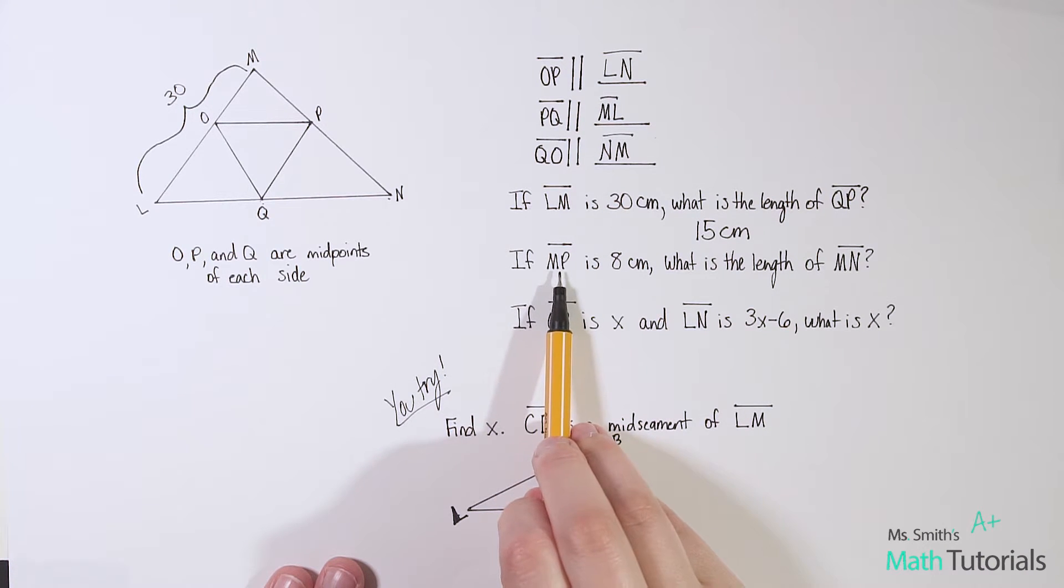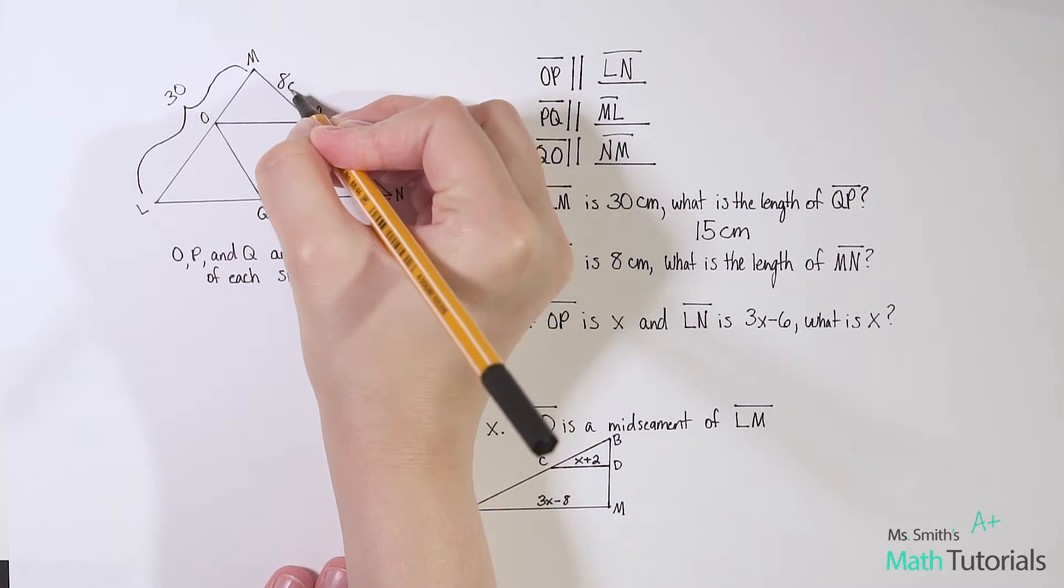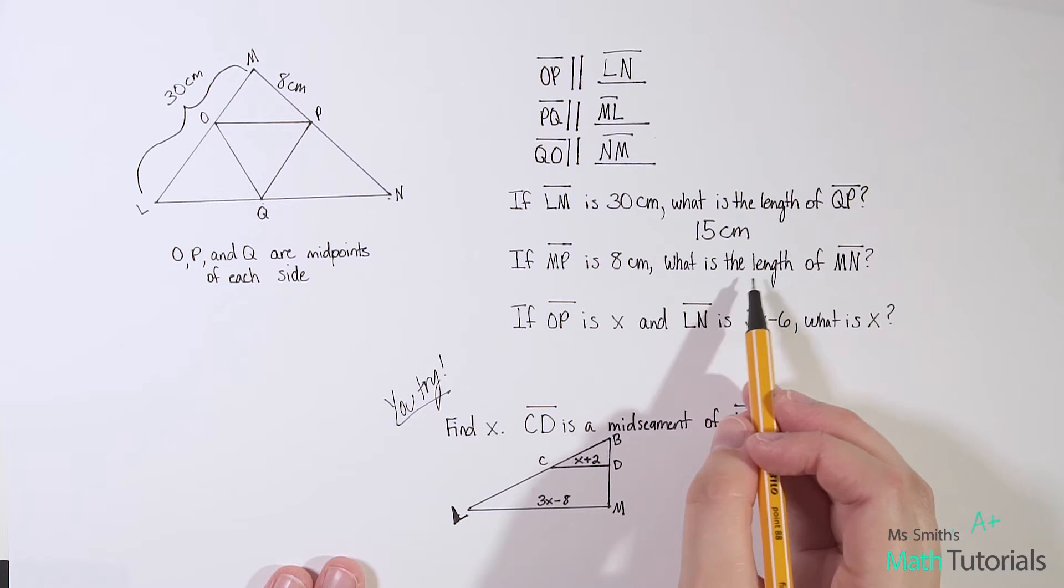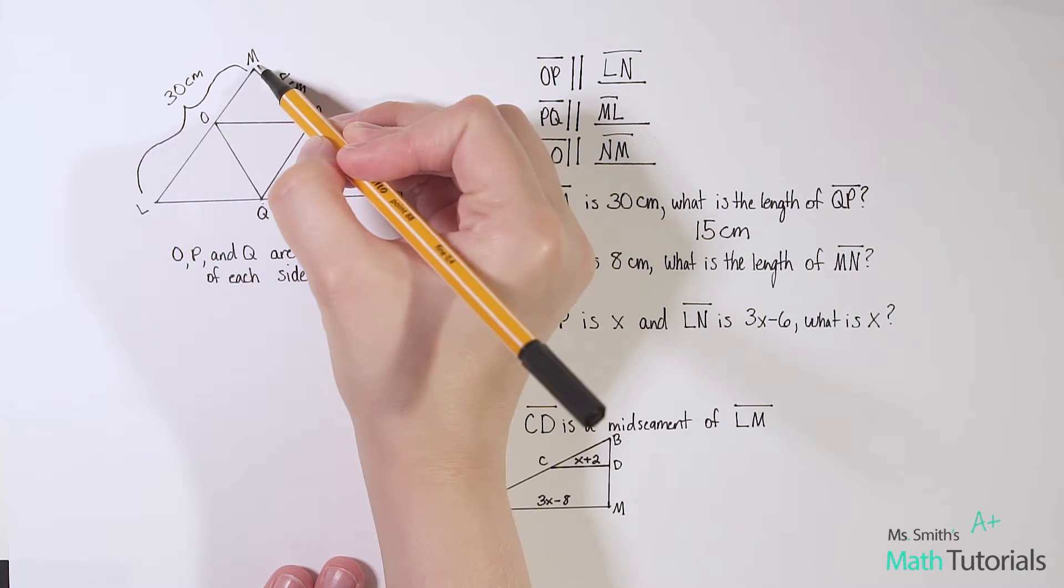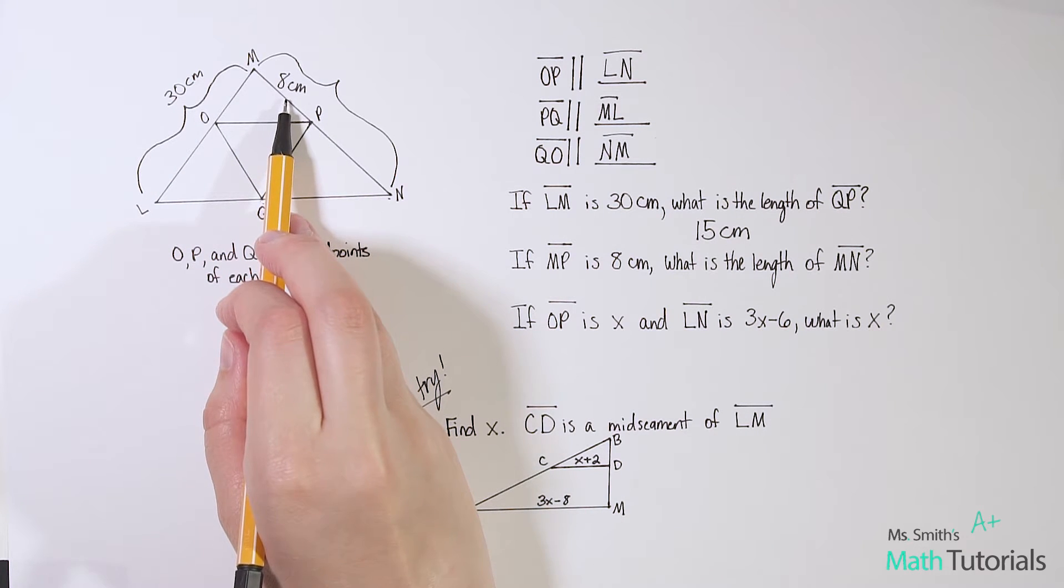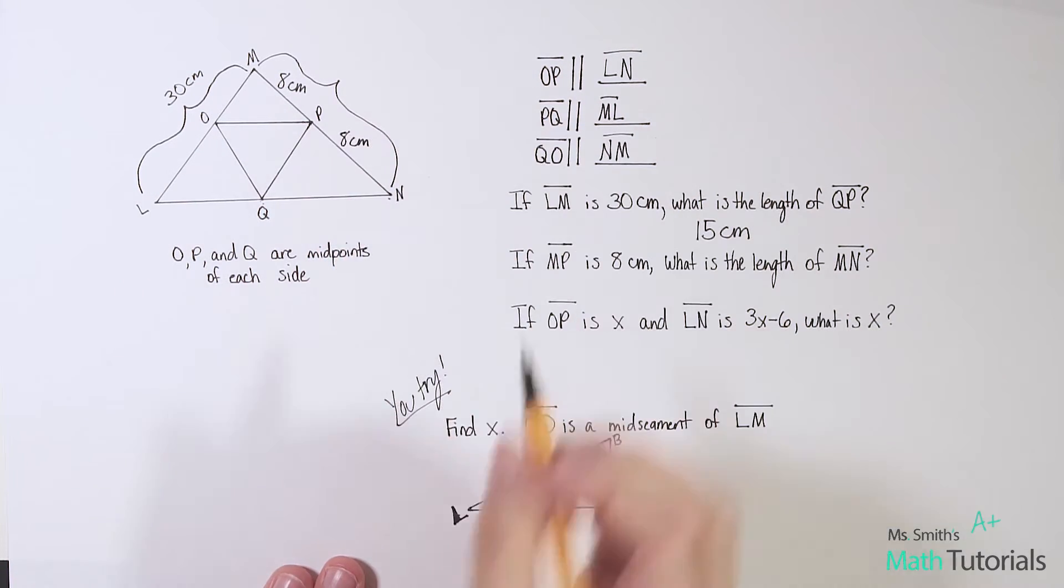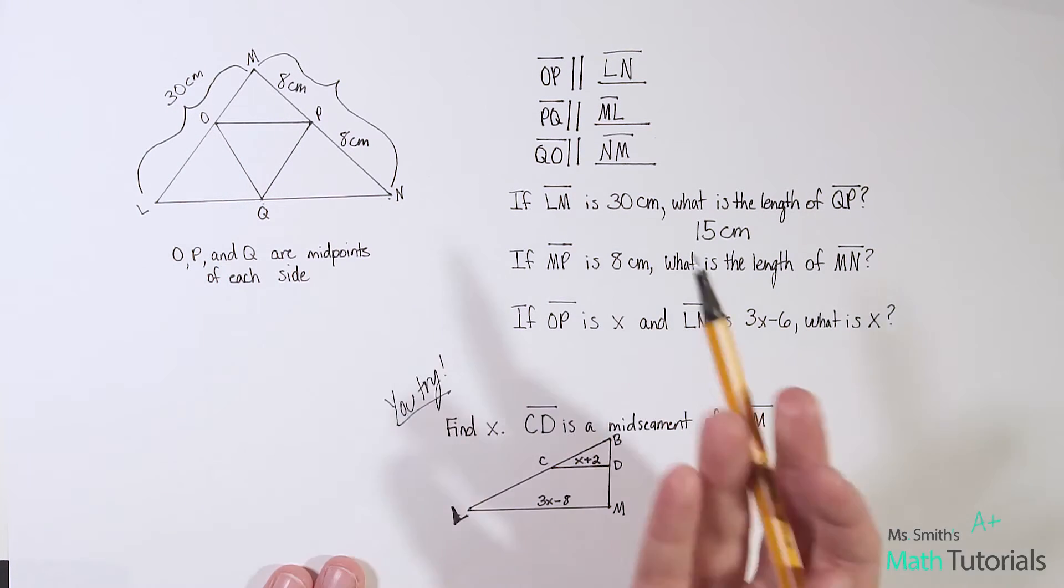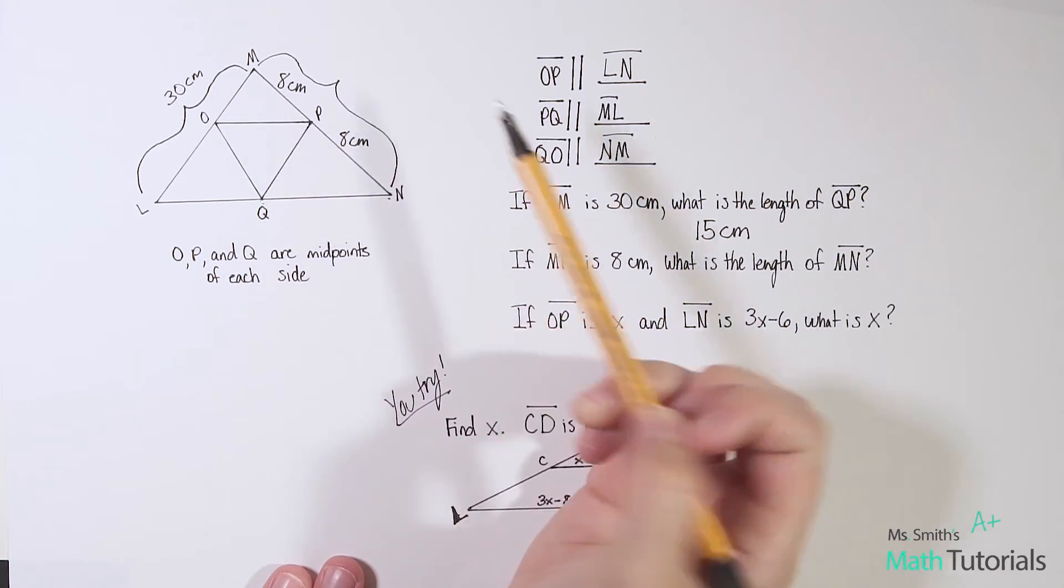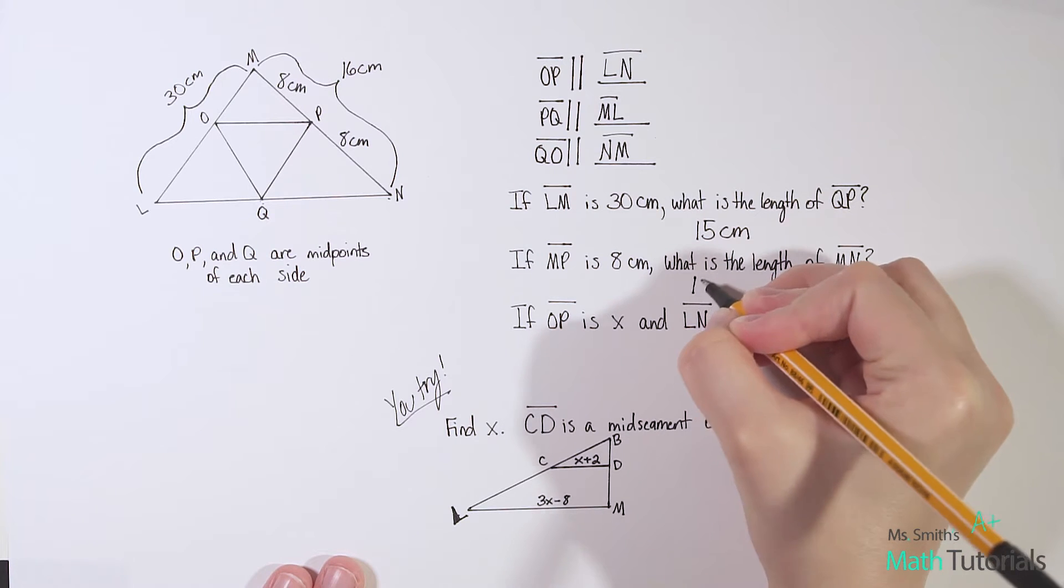All right, now it says if M, P, so M, P is right here. If M, P is 8 centimeters, so let's label that. M, P, that was 30 centimeters. If M, P is 8 centimeters, what is the length of M, N? So we want to know what is the length of this total side. Well, if M, P is 8 centimeters and P is the midpoint, then I can say P, N is also 8 centimeters. And some people might be saying, well, this one looks a little shorter than this one. This is not drawn to scale. We're just making some assumptions here. This is just a rough sketch. So 8 plus 8 gives me 16. So I know the M, N is 16 centimeters.